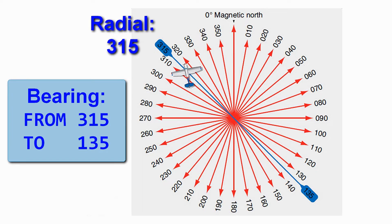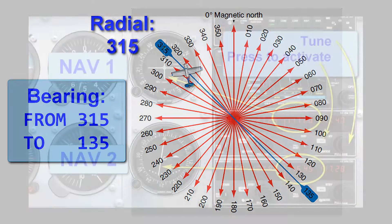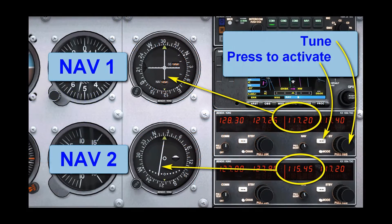To navigate with the VOR we first have to tune its frequency in one of our navigation radios. The frequencies can be found on the aeronautical maps. We use this knob to tune the frequency, and once we are done we press this button to transfer the tuned frequency into the active field, and then these instruments listen to that particular beacon.